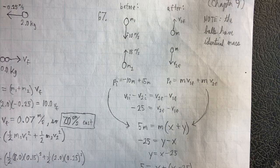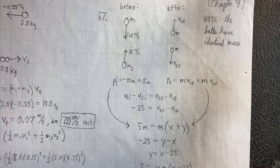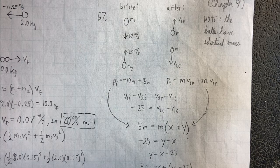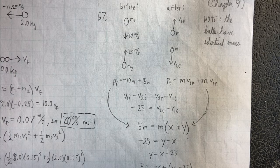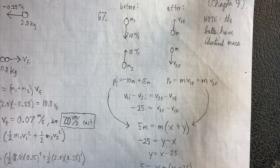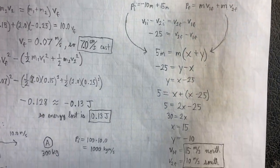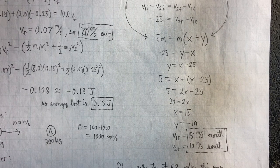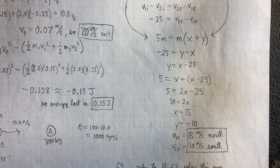Now we still have our relative velocity equation. That's why we have V1I minus V2I equals V2F minus V1F. And so negative 25 equals V2F minus V1F simplified to negative 25 equals y minus x. The rest of the problem then is just doing the algebra and arithmetic. And we end up with V1F equals 15 meters per second north and V2F equals 10 meters per second south.